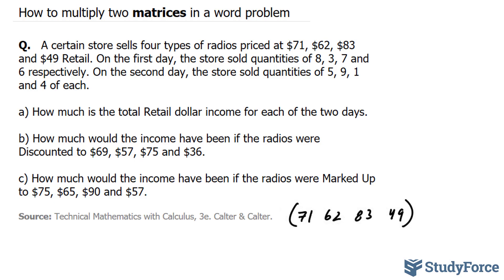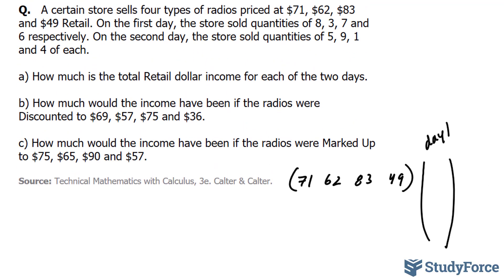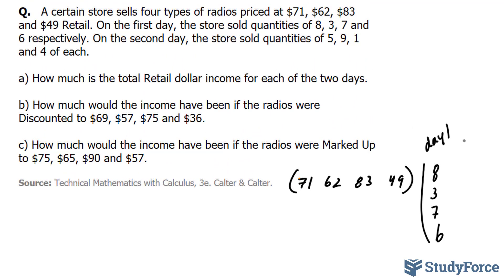Here's what I mean. So for day one, we can have a column vector for how many were sold: 8, 3, 7, and 6. And day two can be represented right beside it, where we have 5, 9, 1, and 4.